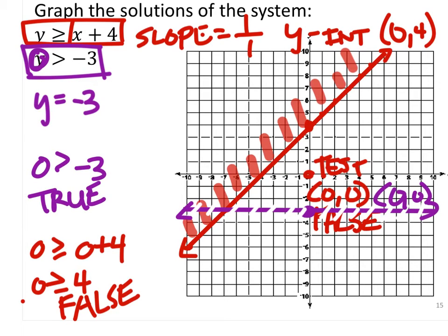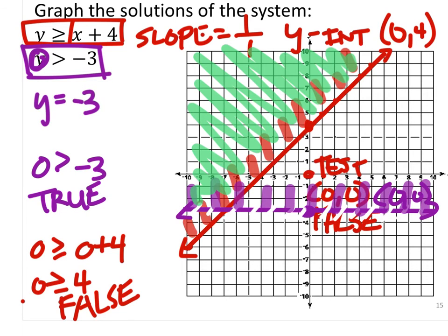So I would need to shade above on this line. So once again, if we just do little marks like this, it may help us to see where the two intersect. And that would look something like this.